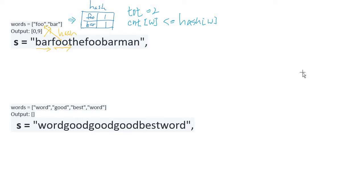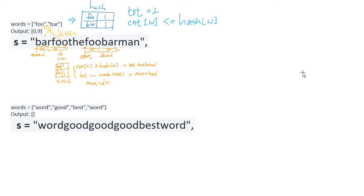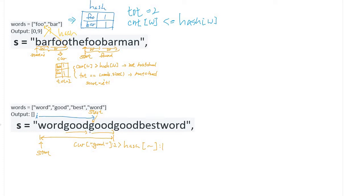Starting from the first position, 'bar' and 'foo' are found in the hash table, each with count one, and total count is two, so we push the first starting point into the answer array. At the second start, 'foo' and 'bar' also satisfy the conditions, so that starting point is also pushed. In the second example, 'good' appears twice, making its count bigger than the value in the hash table, so the condition is not satisfied and we move the starting point forward by one.